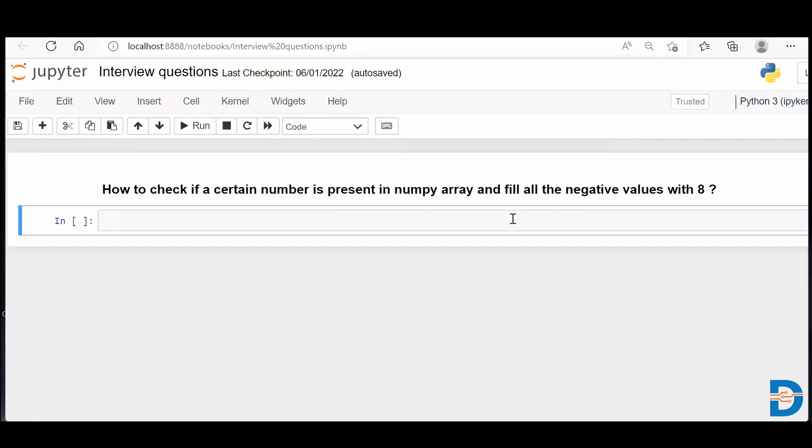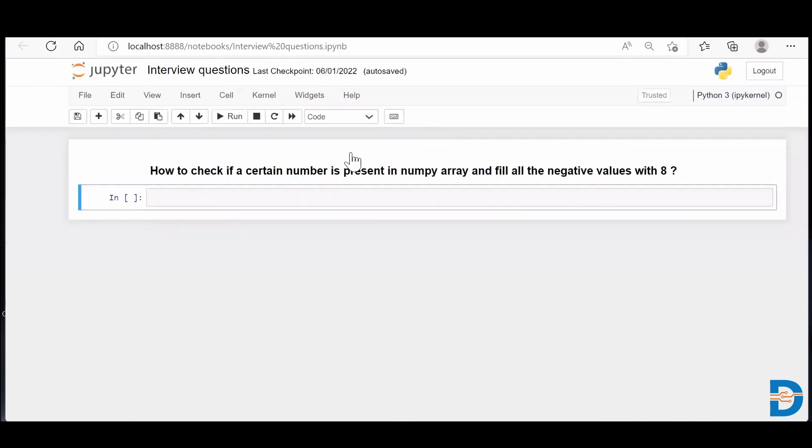Hi guys, Nisarg here from DataMites. So today's NumPy interview question is how to check if a certain number is present in NumPy array, and we have a second question as well: fill all the negative values which are present in this NumPy array with a number 8. So how do we do this? Let's see.